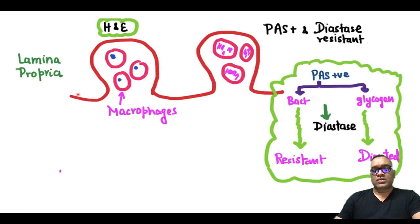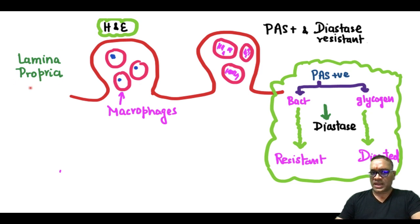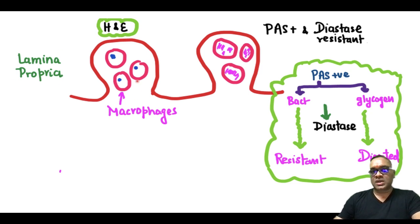When you are going to see the microscopic examination, the H&E section will be showing you only one thing: that the Lamina propria is flooded by the foamy macrophages.